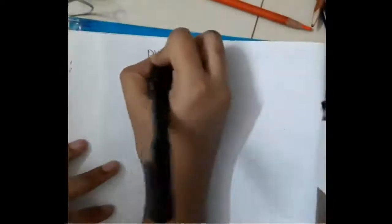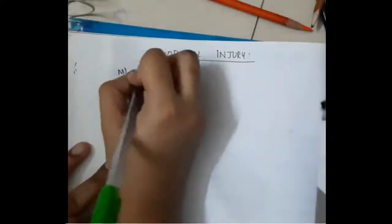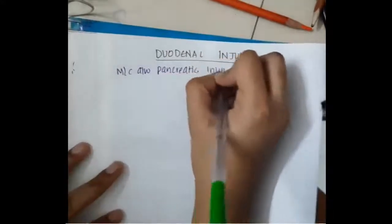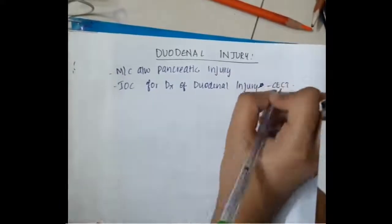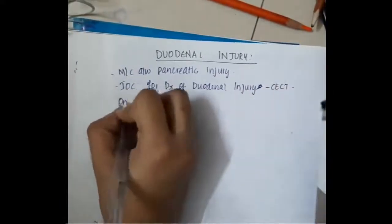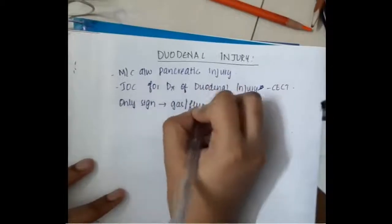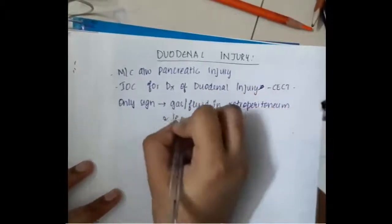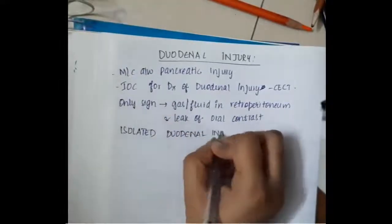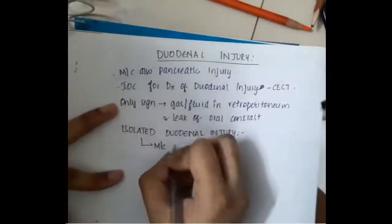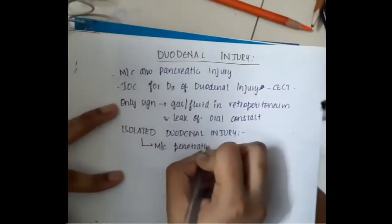The next important injury is duodenal injury. Duodenal injury is most commonly associated with pancreatic injury. The investigation of choice is CECT. The signs of duodenal injury include gas or fluid leak in the peritoneum and retroperitoneum, and leak of contrast in the retroperitoneum. There are also situations where isolated duodenal injury can occur.